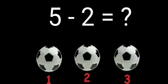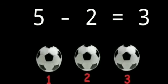Let's count together: one, two, and three. So three balls are remaining with Sia. The subtraction of five minus two is three. Total number of balls were five, two were taken away, so the answer is three.